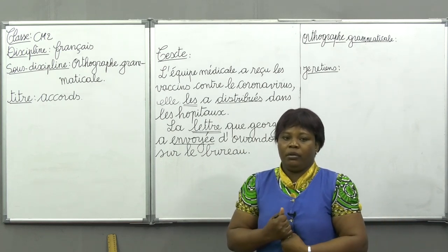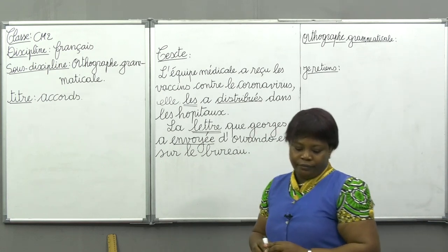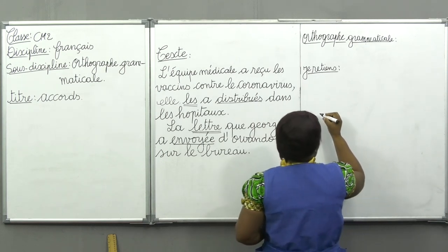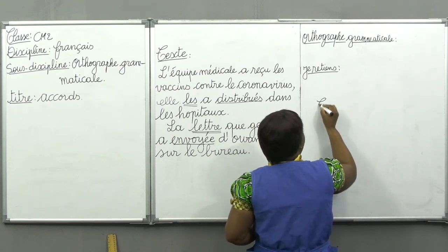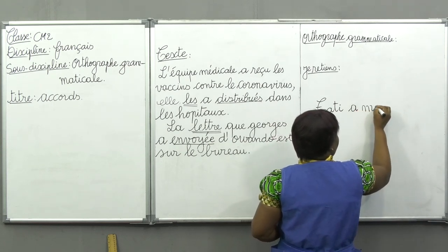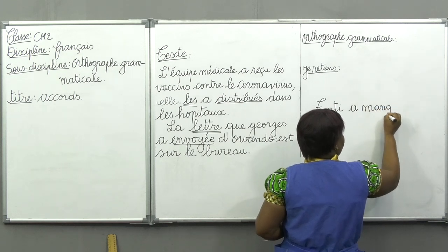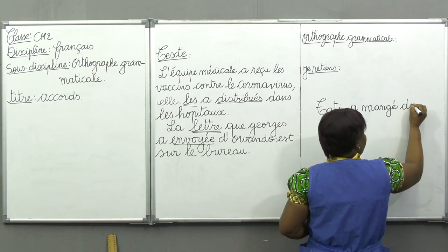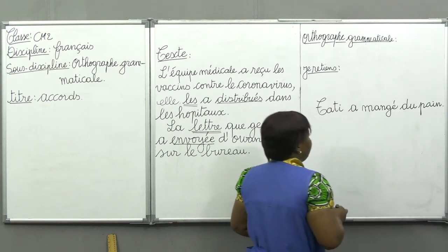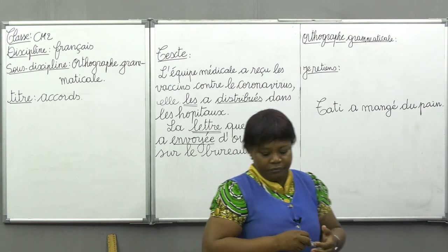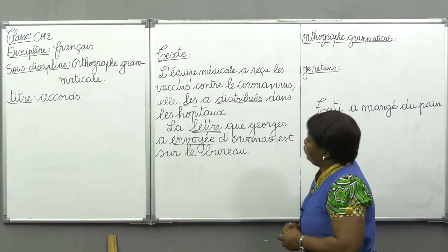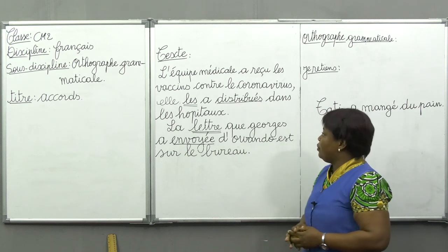Suivez au tableau. Écrivons une phrase : Tati a mangé du pain. Nous avons le texte au tableau. Faisons la lecture silencieuse du texte.